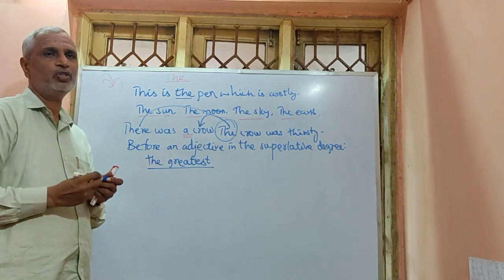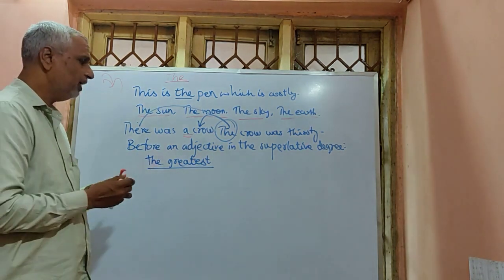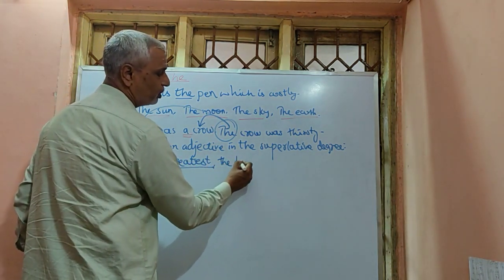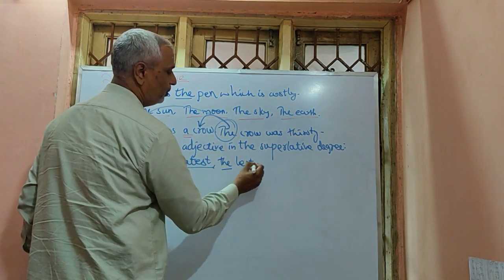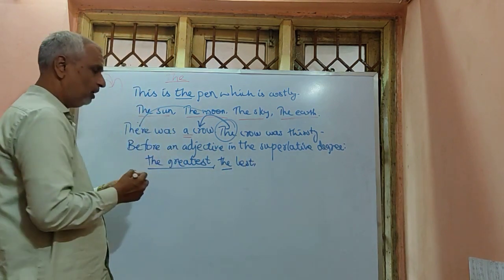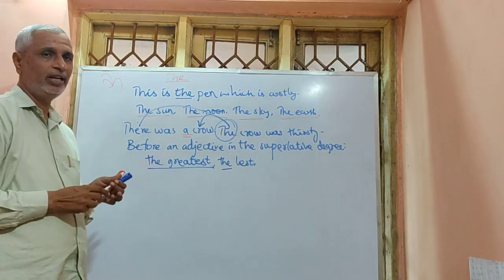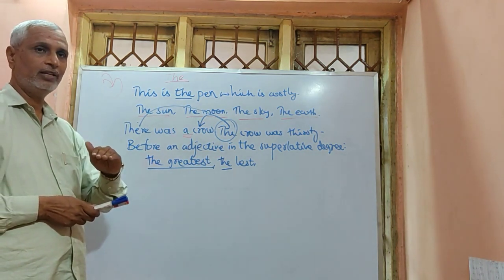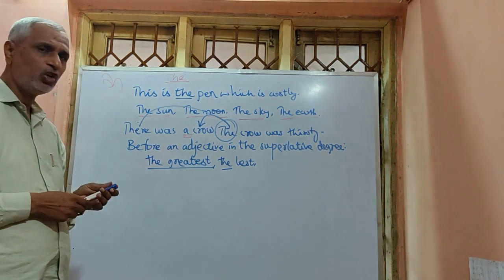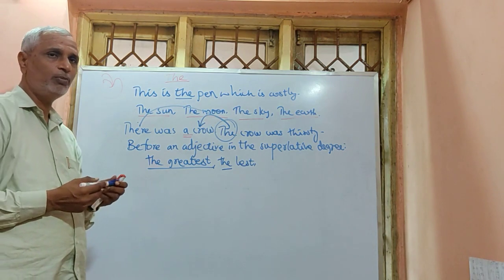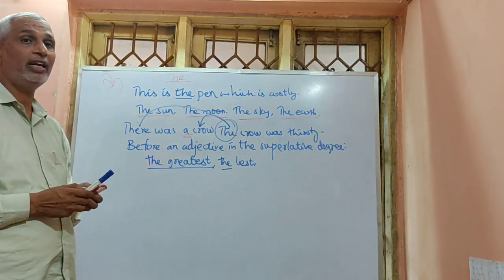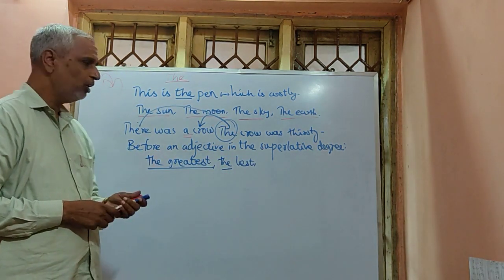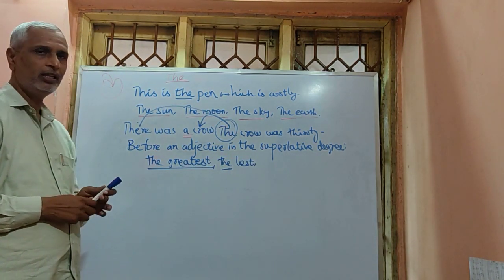Superlative examples include: the best student, the highest, the lowest, the strongest, the weakest, the most beautiful, the most attractive. Before an adjective in the superlative degree, we can use article 'the'.